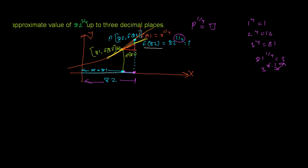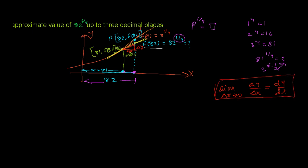We need to find the derivative at point Q. If you look at the diagram, this particular part is Δy and this part is Δx. We have already defined that the derivative is the limit as Δx → 0 of Δy/Δx, which equals dy/dx. Here, Δx is the small increment we made in x to go from 81 to 82 — that increment is +1. When Δx approaches a very small value, Δx ≈ dx, and similarly Δy ≈ dy.